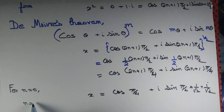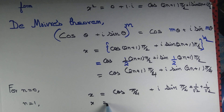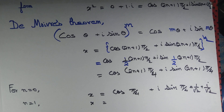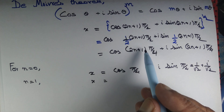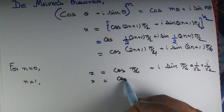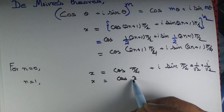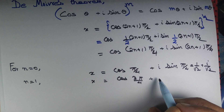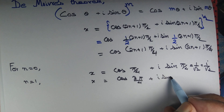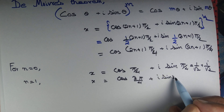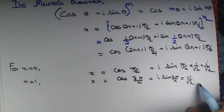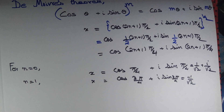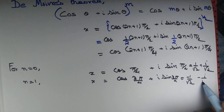For n = 1, x = cos(3π/4) + i sin(3π/4), which equals −1/√2 + i/√2, since in the second quadrant cosine is negative and sine is positive.